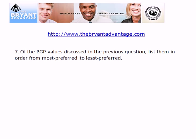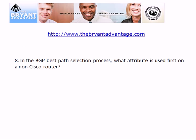For question 7, from most preferred to least preferred: IGP, EGP, then incomplete — which is actually the order I put them on the whiteboard. For question 8, in the BGP best path selection process, weight would be first on a Cisco router, but weight is a Cisco proprietary attribute. The first attribute considered on non-Cisco routers is actually local preference, and the highest value is preferred.